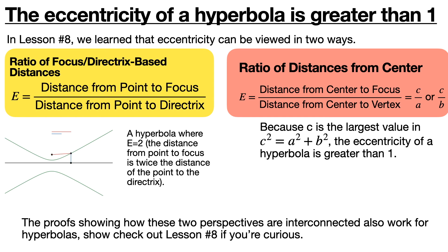Now that we've found how c relates to a and b, it's a good time to ask how eccentricity fits into this picture. The eccentricity of a hyperbola is greater than 1, and we can see this using the same two definitions of eccentricity that we used for ellipses. The first is that eccentricity can be thought of as the distance from the point to the focus over the distance from the point to the directrix. By looking at the animation you can see that the eccentricity is 2 in that example.